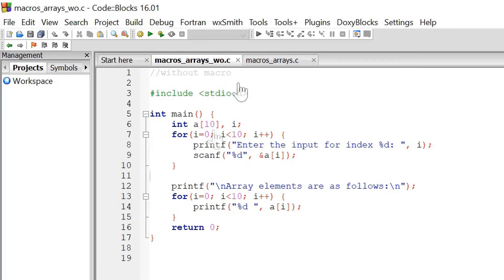This program is without macro. Suppose in future, I want to ask user to enter 15 elements in this array. It is not possible to enter 15 elements in this array because the length of this array is 10. I can change this to 15 in order to allow 15 elements to be entered inside this array. Not only that, I have to make change over here as well, and I have to make change over here as well. This way, I can allow 15 elements to be entered inside this array.